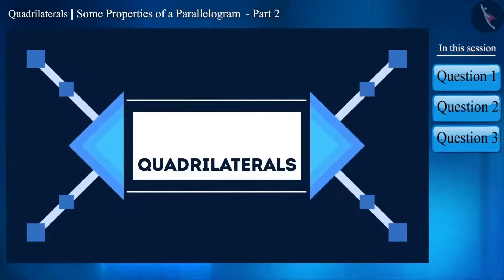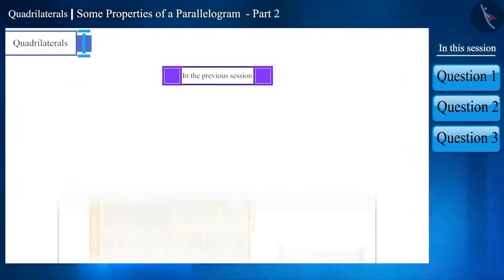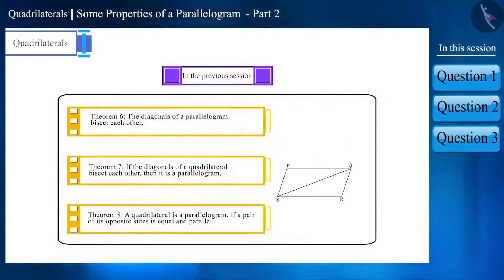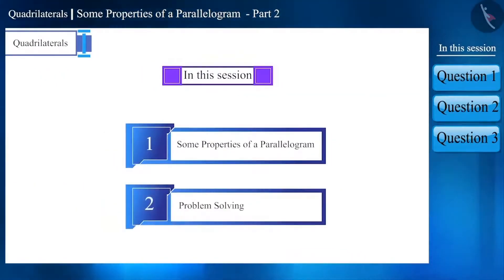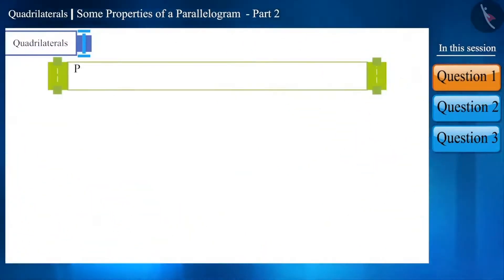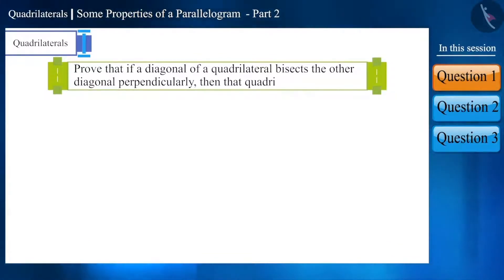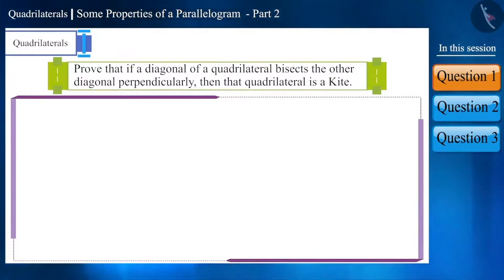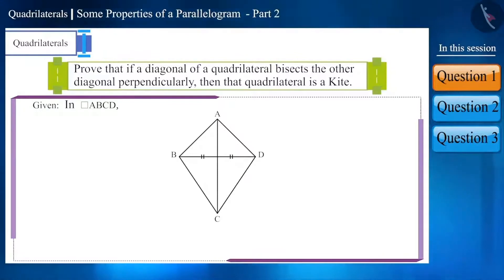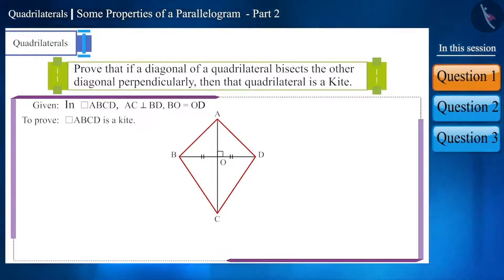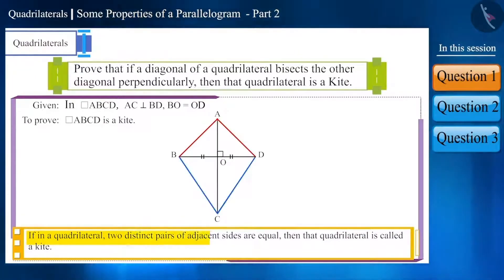Hello friends, welcome to this video on quadrilaterals. In the previous video we saw some properties of parallelograms. Today we will solve some more questions. The first question: prove that if a diagonal of a quadrilateral bisects the other diagonal perpendicularly, then that quadrilateral is a kite. Let's draw a figure — suppose ABCD is a quadrilateral and diagonal AC bisects diagonal BD perpendicularly at point O. We have to prove that ABCD is a kite. In a kite, two distinct pairs of adjacent sides are equal.